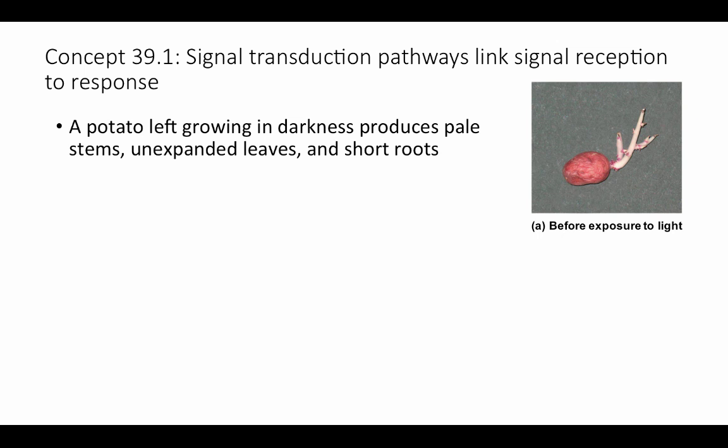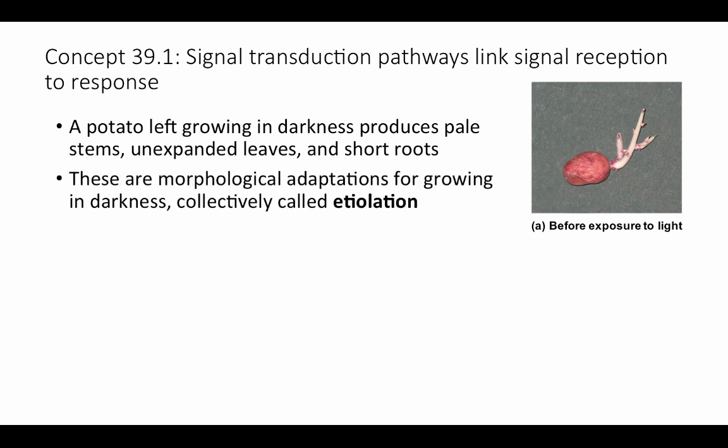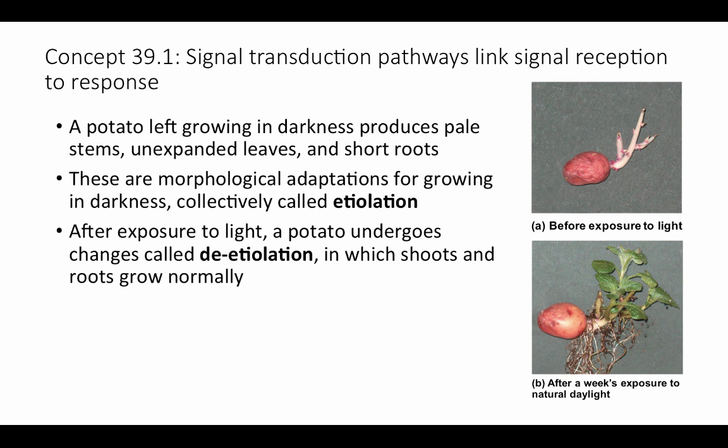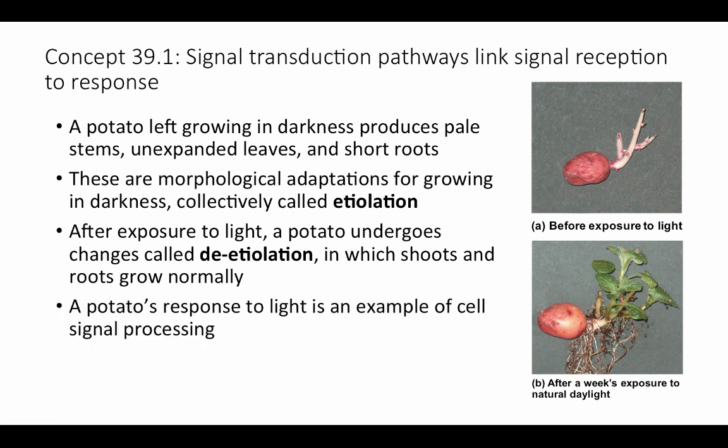As our working example, consider a potato grown in darkness: it produces pale stems, unexpanded leaves, and short roots — a condition called etiolated. These are morphological adaptations for growing in darkness; there's no point producing chlorophyll without light or expending energy to expand leaves. If you're underground, you want to grow toward the light quickly. After exposure to light, the potato undergoes de-etiolation, in which shoots and roots grow normally. This de-etiolation response is an example of cell signal processing.